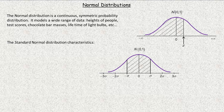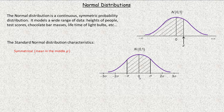A normal distribution graph is symmetrical and centered about the mean. The symbol used for the mean is mu. For the standard normal, mu equals 0. Not every normal distribution will have a mean of 0, but there's a transformation formula you can use. For the standard normal, the mean is 0 and the standard deviation is 1 — that's why it's called standard.